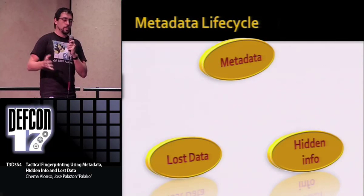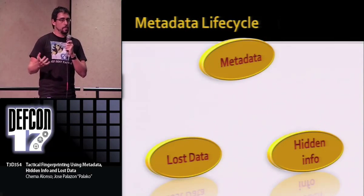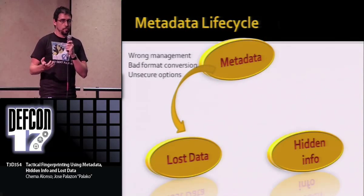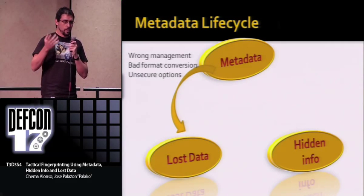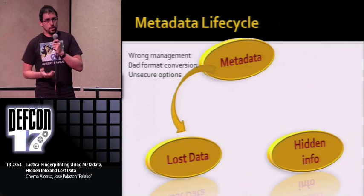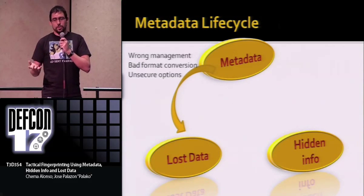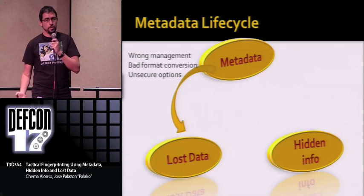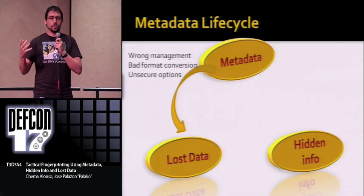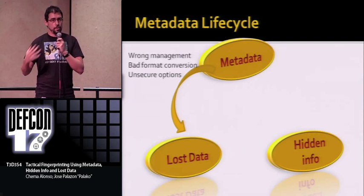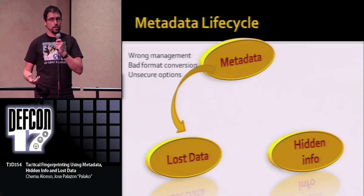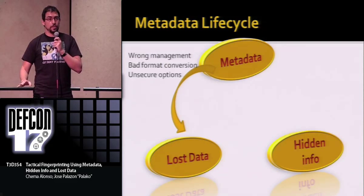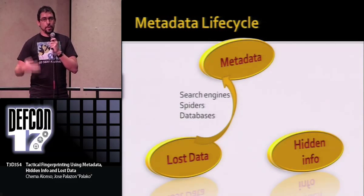We want to treat all three kinds of information the same — metadata, lost data, and hidden information — because at the end of the day they can become one or the other. For example, when you export a document as PDF, some of the metadata is actually going to become information in the PDF document itself — attached at the bottom — and you probably won't notice. If you publish this document, everybody will be able to see that. Search engines are going to index this information too.